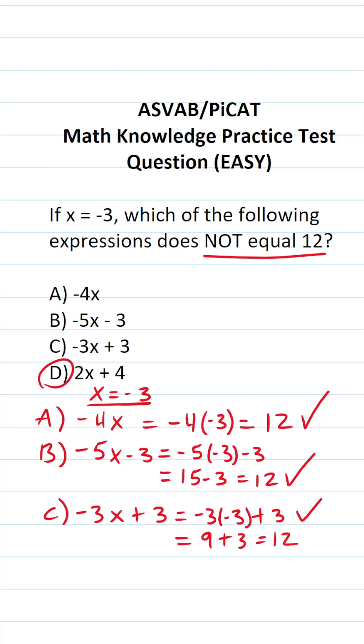By process of elimination, we know d is the correct answer. But let's go ahead and work it out. We have 2x plus 4. We know x is going to be negative 3. So this is going to be 2 times negative 3 plus 4. 2 times negative 3 is negative 6 plus 4. Negative 6 plus 4 is negative 2. So we can see that d is equal to negative 2, not 12.